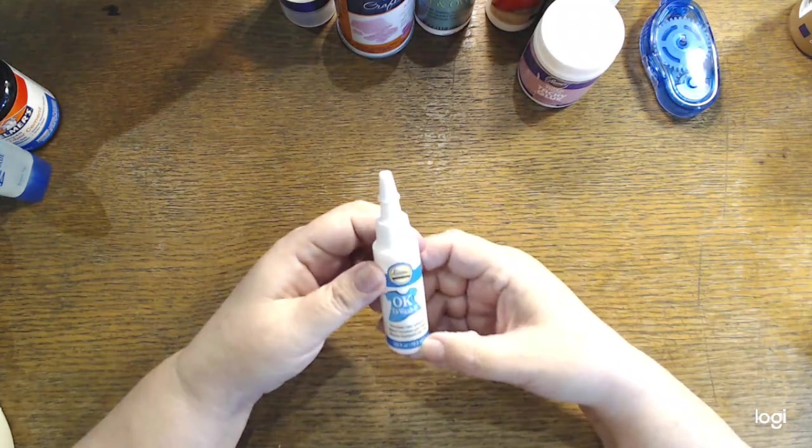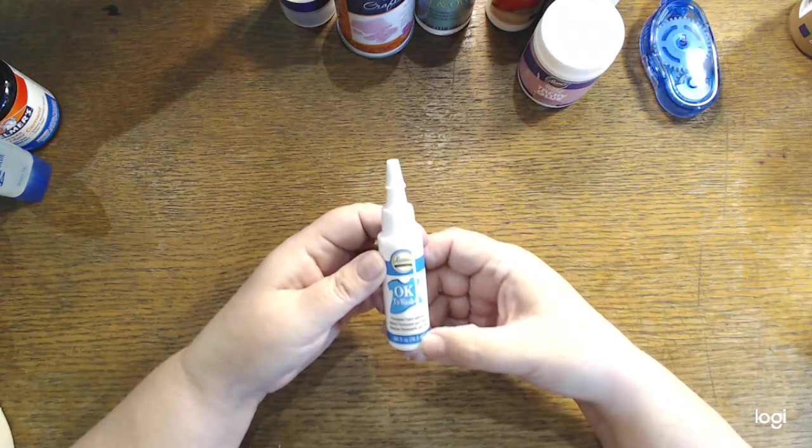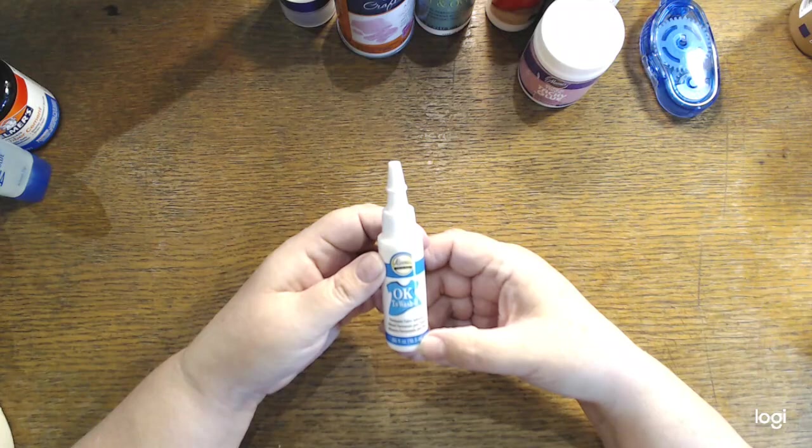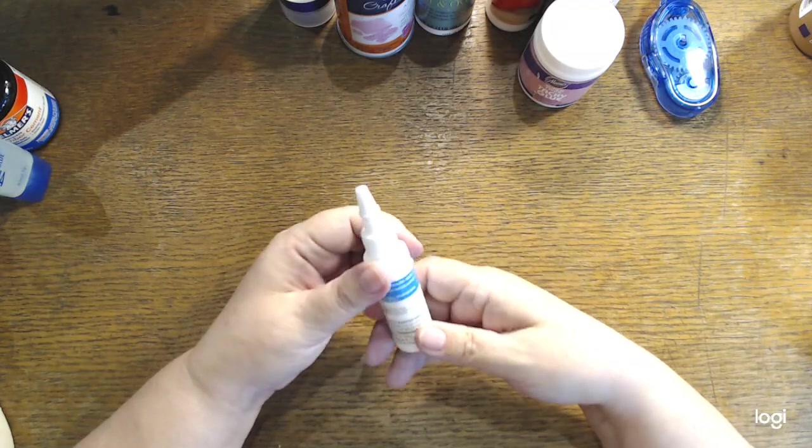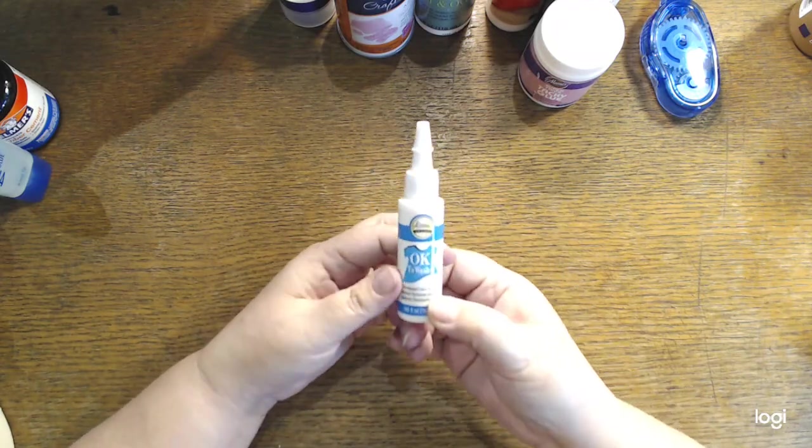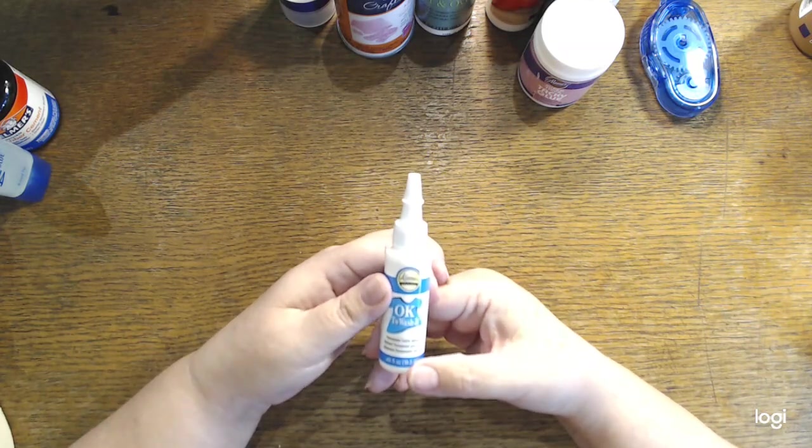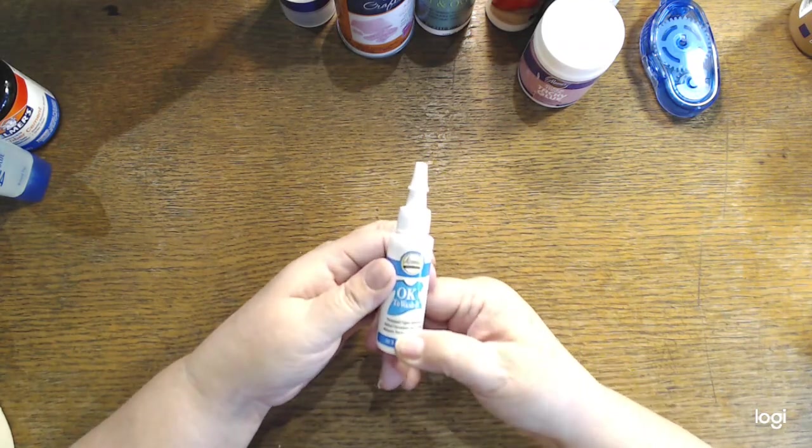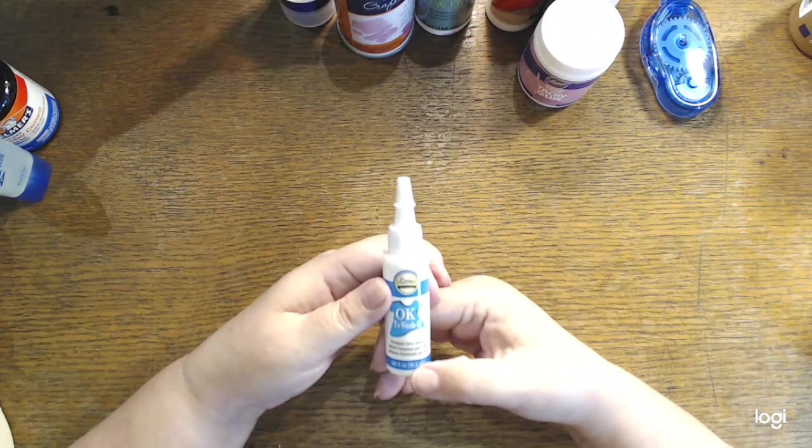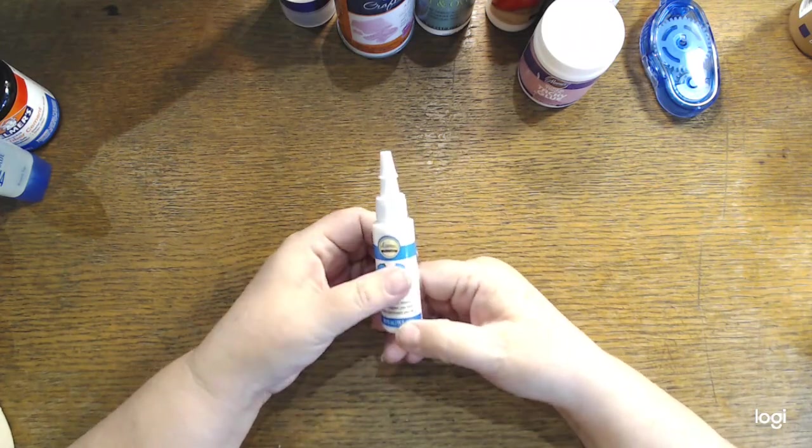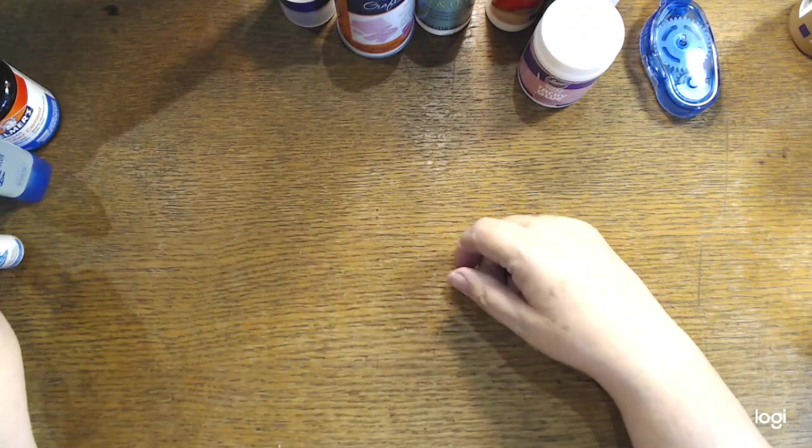This came in some kind of a sample pack from Aileen's. Okay to wash it. Permanent fabric adhesive. I wish I'd had something like this years ago when I was trying to hem my pants and dresses and I didn't have a sewing machine because that would have been cool. I used to use just regular Elmer's glue, believe it or not, to try and do that. I haven't taken the lid off of this one yet.